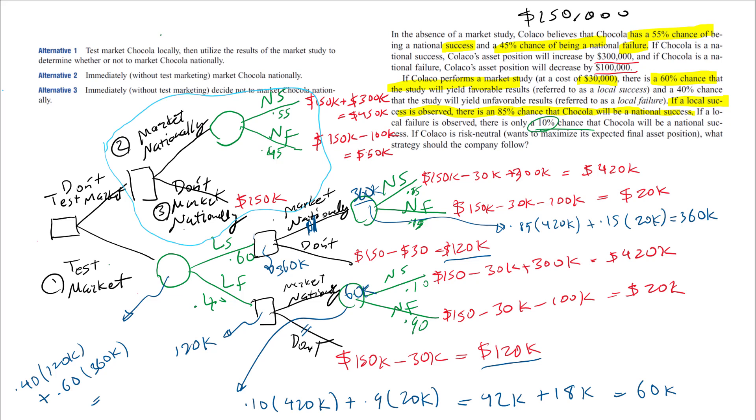Which is 264K. I need to do the same thing here for this node, which will be 0.55 times plus 0.45 times, and that is 270K.